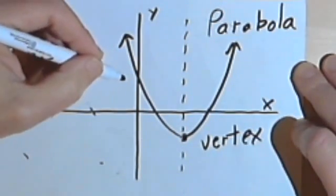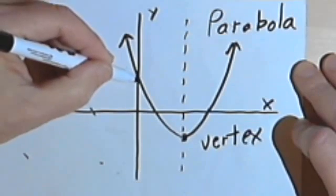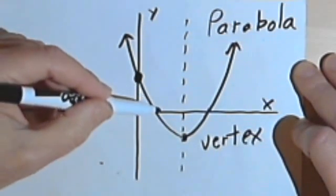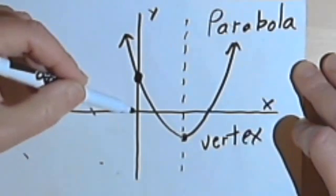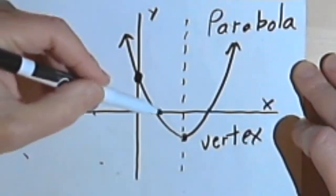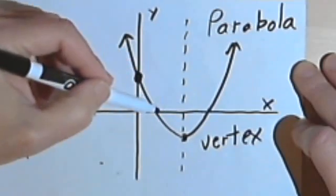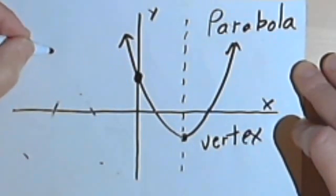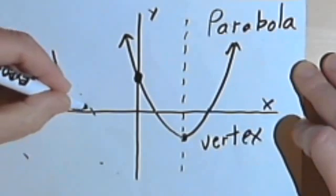A quadratic function will also have a vertical intercept, this point right here. That's going to be where the graph goes through the vertical axis, and it might have two horizontal intercepts, as in this case.